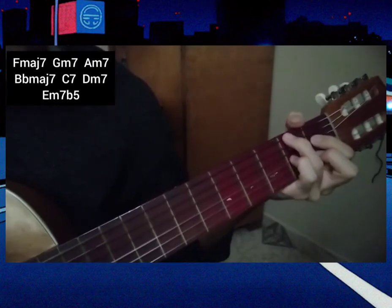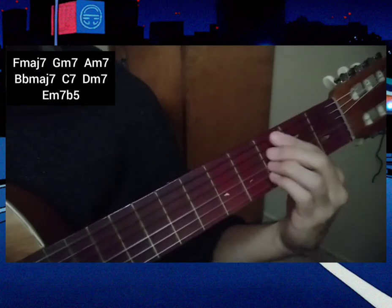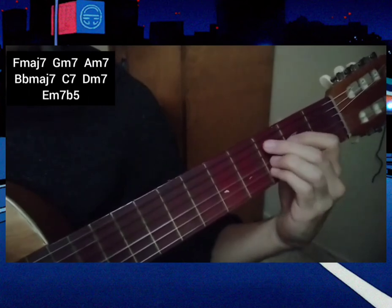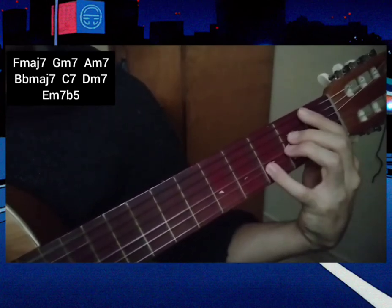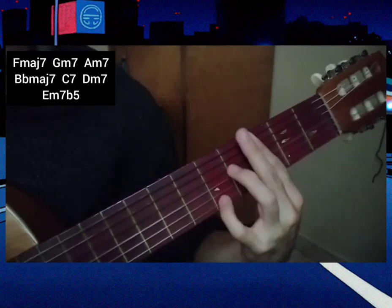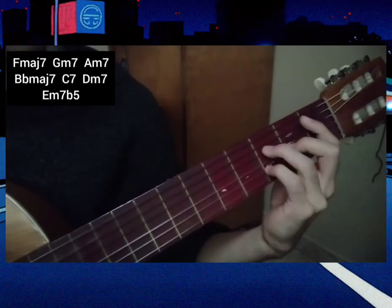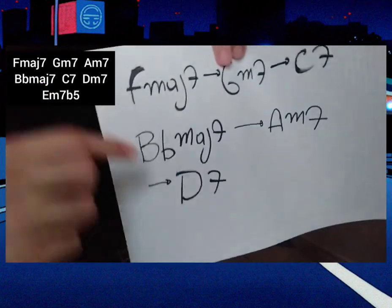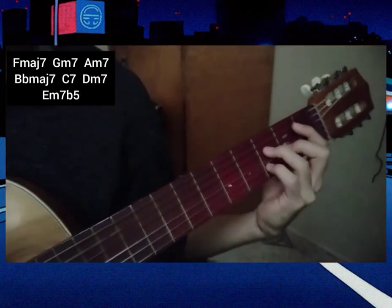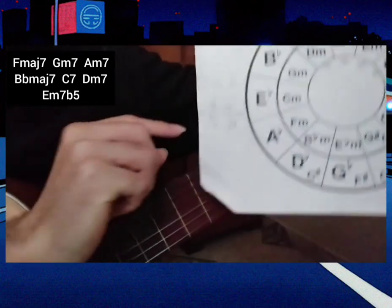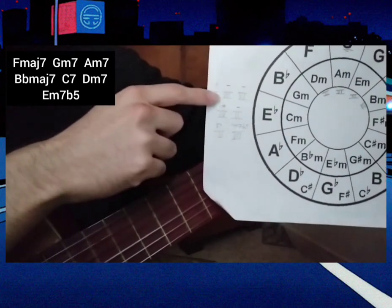Actually this is not a C7 but a C9, because we're using the ninth tension instead of the seventh. Then there's a B flat — the fourth degree — which is subdominant, pointing to a dominant or a rest chord. Then we go to A minor seven.